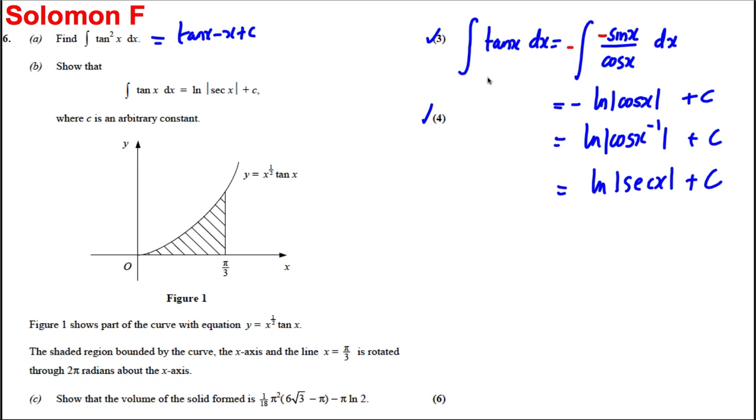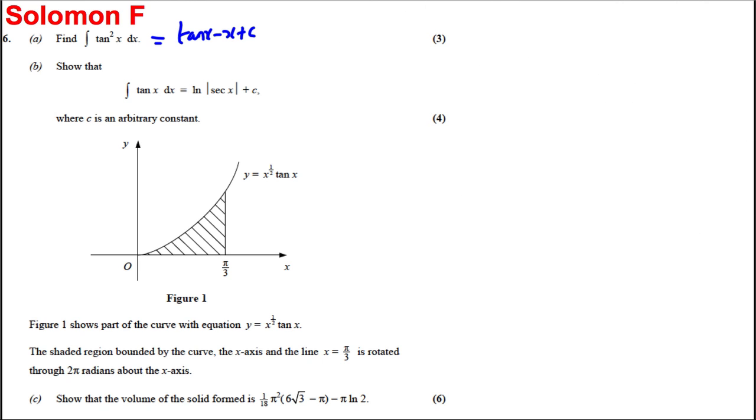Let's keep going with this. Then we have a curve. And the curve is x to the half tan x. And figure one shows part of the curve. And the shaded region is bounded by the x axis and the line x is pi by three. So here x is equal to zero. And here x is equal to pi by three. Show that the volume of revolution is as such. So the formula for the volume is pi the integral of y squared dx. The volume is going to be pi the integral between zero and pi by three. Now, let's square this. If I square that, I get x. x to the half squared is just x. Tan squared x with respect to x.